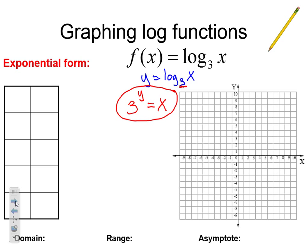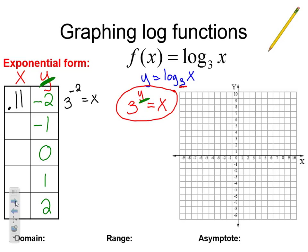Notice the key difference — now our exponent is y instead of x. So when we make our table, instead of plugging in x values, we're going to plug in y values: negative 2, negative 1, 0, 1, 2. Then we compute x using 3 to the y: 3 to the negative 2 gives 0.11, 3 to the negative 1 gives 0.33, 3 to the 0 gives 1, 3 to the 1 gives 3, and 3 squared gives 9.